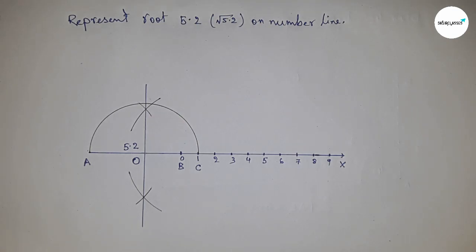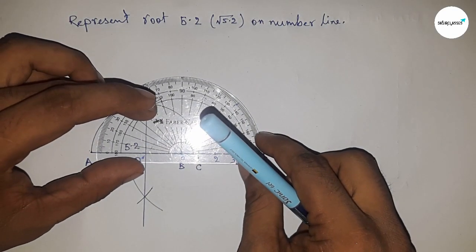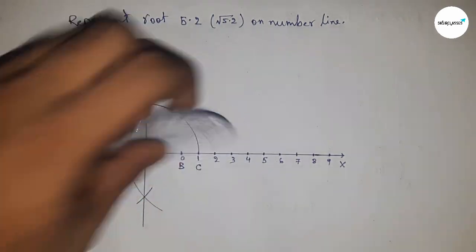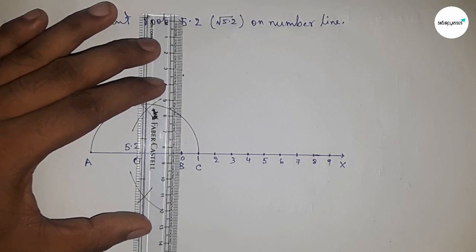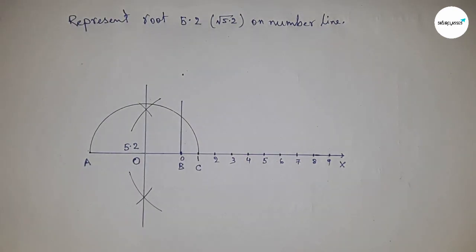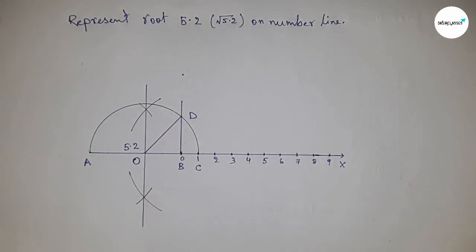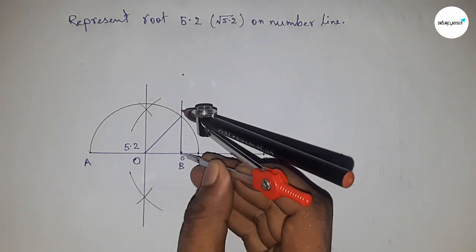Draw a 90-degree angle at point B using a protractor, which meets the semicircle at point D. Join O and D.